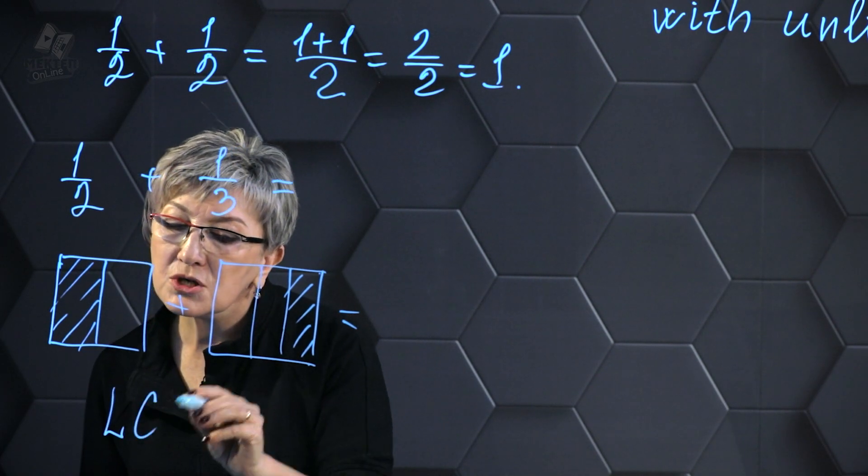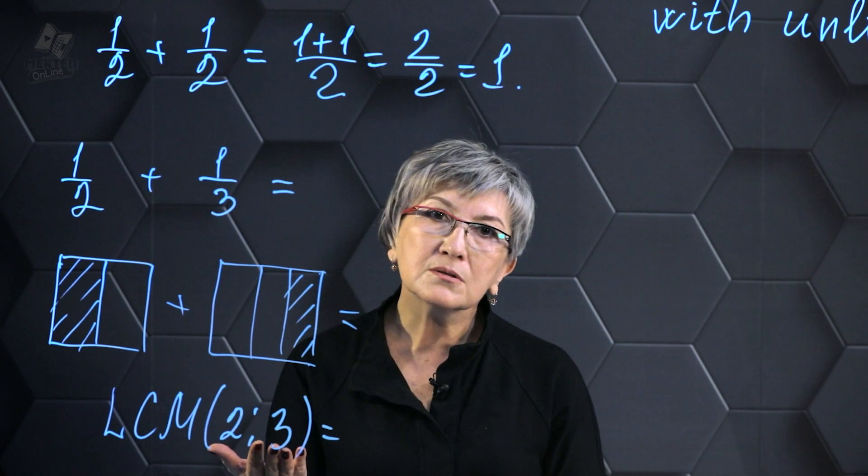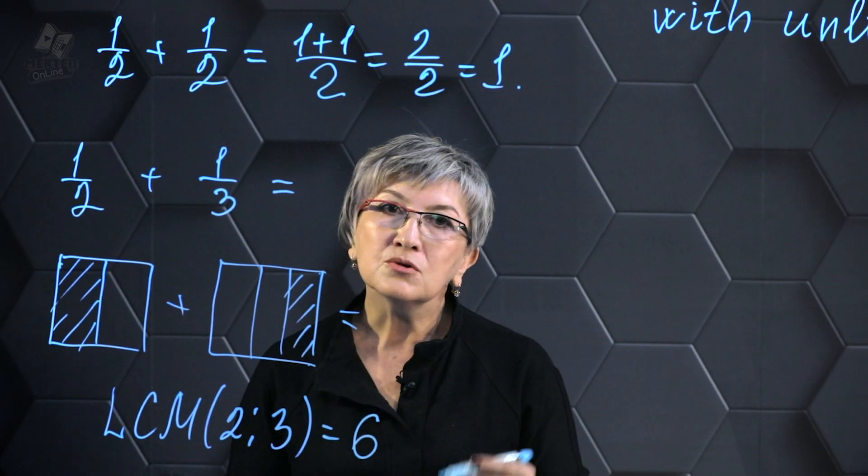The least common multiple allows us to find the number of parts we can divide both fractions into. The LCM of numbers 2 and 3 is 6, which is the least common multiple.